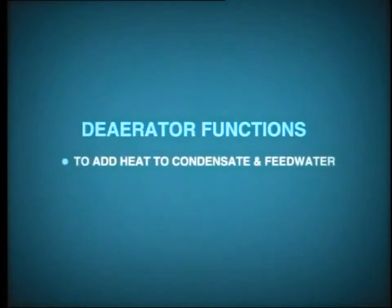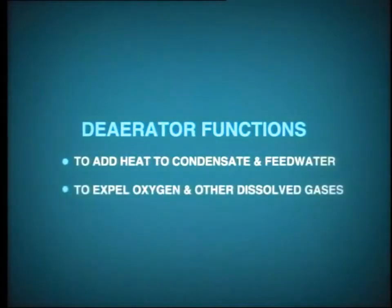This is the deaerator. The deaerator actually has two functions: to add heat to the condensate and feed water to improve cycle efficiency, and to expel oxygen and other dissolved gases from the boiler feed water. The presence of dissolved oxygen in feed water is a prime cause of corrosion in boiler tubes, so removal of as much dissolved oxygen as possible is essential. Normally we try to limit dissolved oxygen in feed water to as low as two or three parts per billion.